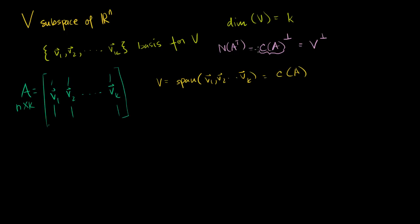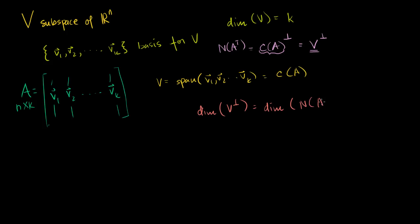So if we want to figure out the dimension of the orthogonal complement of V, we just need to find the dimension of the left null space of A, or the null space of A transpose. The dimension of the null space is called the nullity, so the dimension of V⊥ equals the nullity of A transpose.